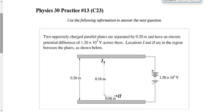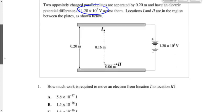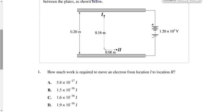I want to have a look at practice question set number 13 — it wasn't homework, I just want to do one or two of these questions as a group. The first question says: two oppositely charged parallel plates are separated by 0.20 meters and have an electric potential difference of 1,200 volts across them. Locations 1 and 2 are regions between the plates. How much work is required to move an electron from location 1 to location 2?